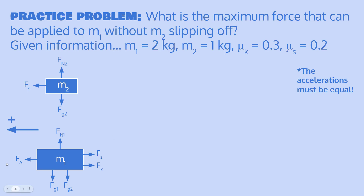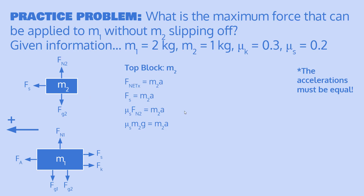The main goal is to find the applied force that gives both blocks the same acceleration. If they start at the same velocity and accelerate at the same rate, they move together without sliding. As soon as the two blocks have different accelerations, the top block falls off. So throughout this solution, we set the acceleration of mass 1 equal to the acceleration of mass 2.